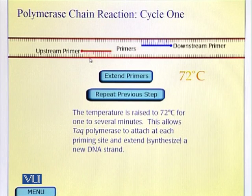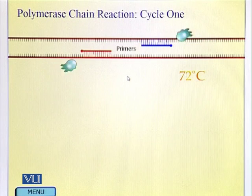Both these primers are going to be extended when we raise the temperature to 72 degrees Celsius. This temperature is ideal for the working of this enzyme. It is most efficient at this temperature. I should mention that this enzyme was isolated from a bacteria that grows at very high temperature. The name of the bacteria, of course, most people are familiar with, is Thermus aquaticus.